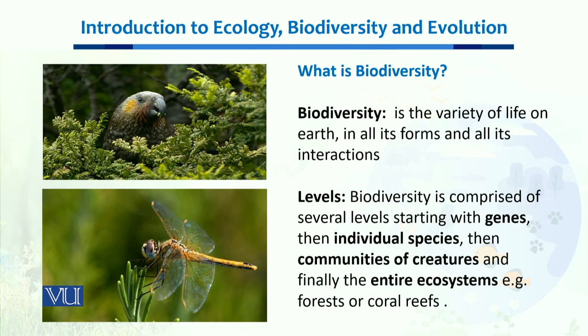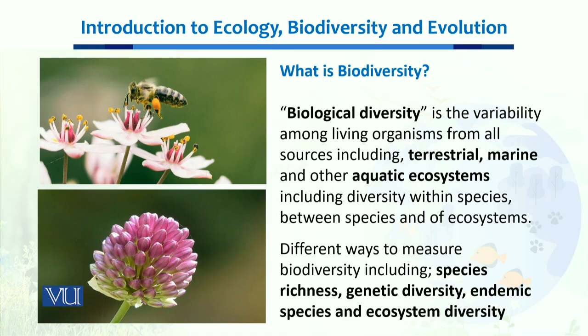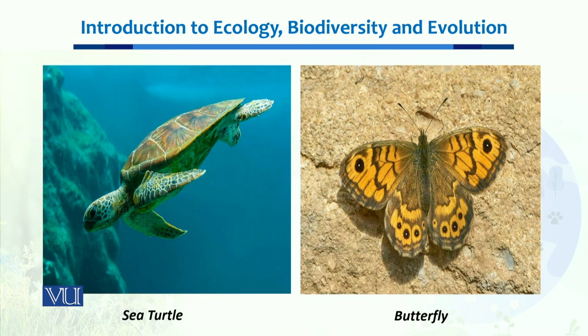Examples of ecosystems include forests and coral reefs, which are studied at different levels. Biological diversity is the variability among different living organisms, and it includes terrestrial environments on land, marine environments in the oceans, and other aquatic ecosystems such as freshwater ponds and rivers. We can measure biodiversity through species richness, genetic diversity, endemic species, and ecosystem diversity. These are some examples of animals which have inhabited this planet at different levels.